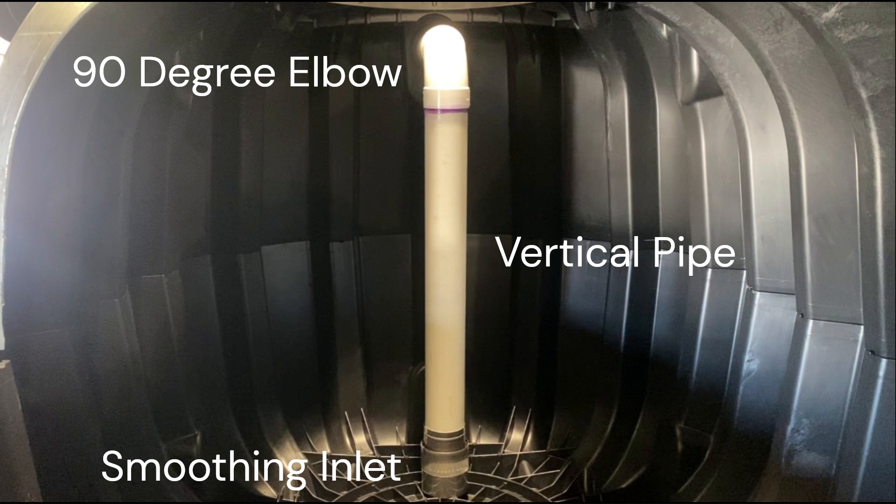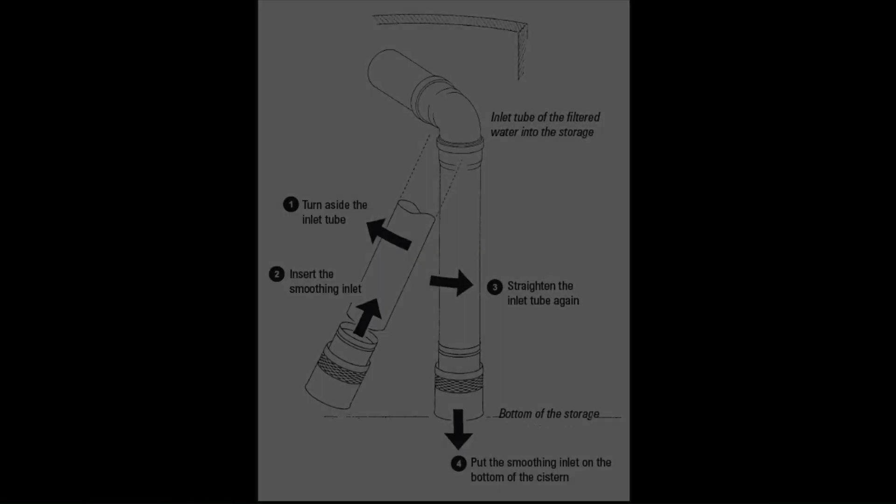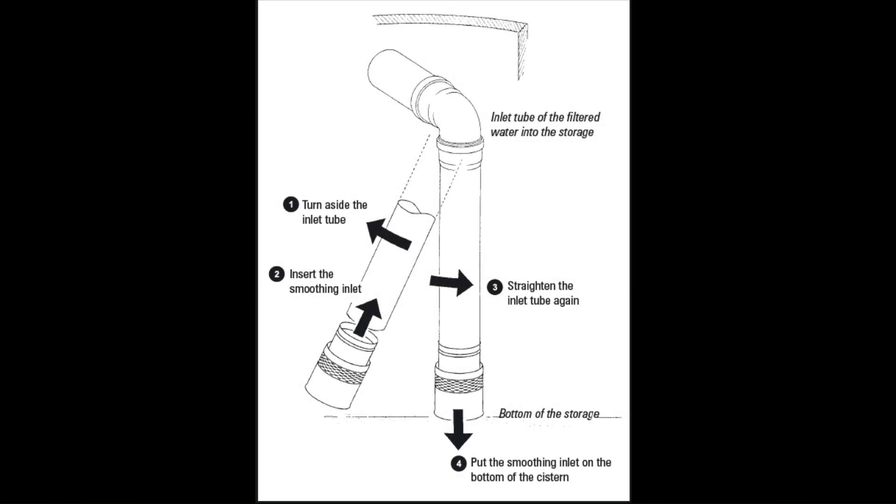The smoothing inlet rests on the bottom of the tank. It does not need to be fastened to the tank floor and it should not be glued to the pipe. The vertical pipe should be cut approximately 3 inches short of the bottom of the tank. To install, simply swivel the vertical pipe to one side, slide on the smoothing inlet, and straighten the pipe out so that the smoothing inlet is resting on the bottom of the tank.